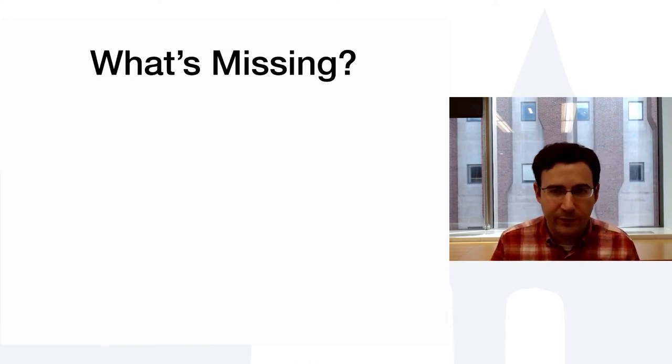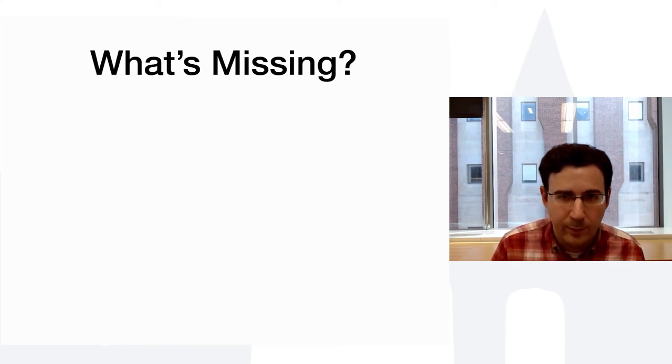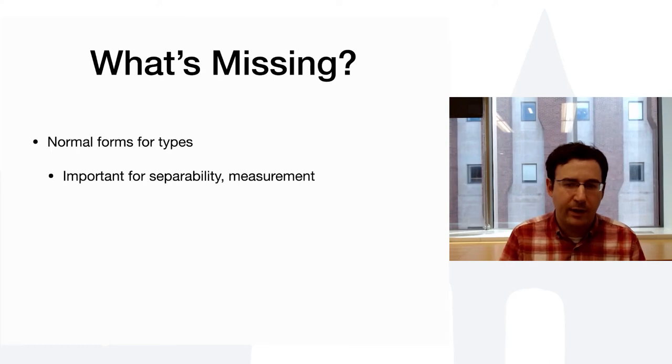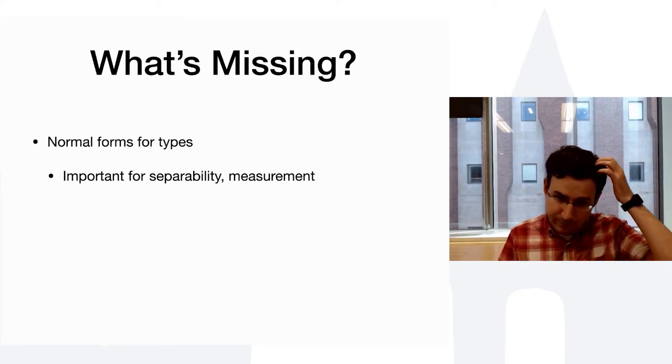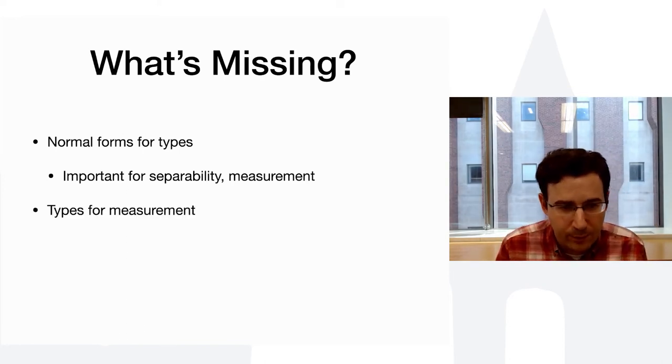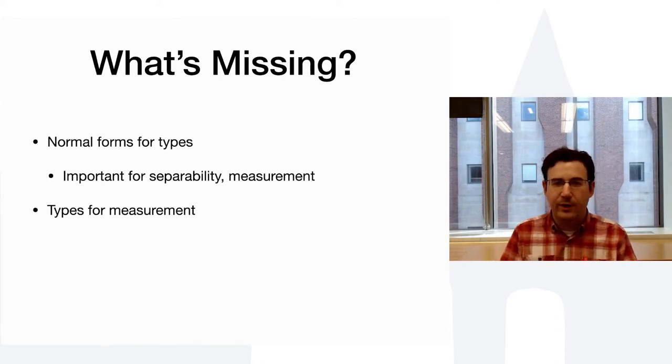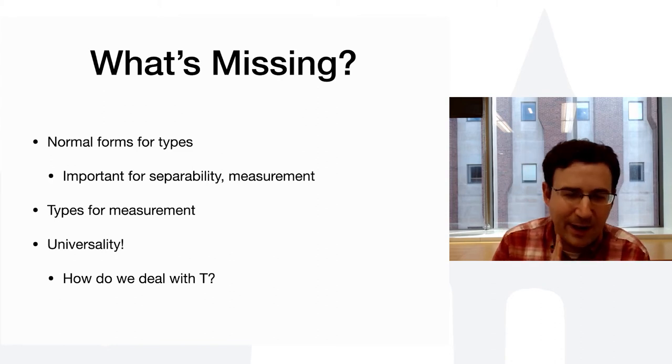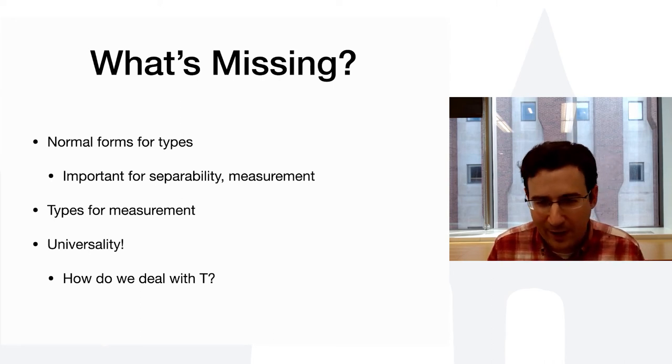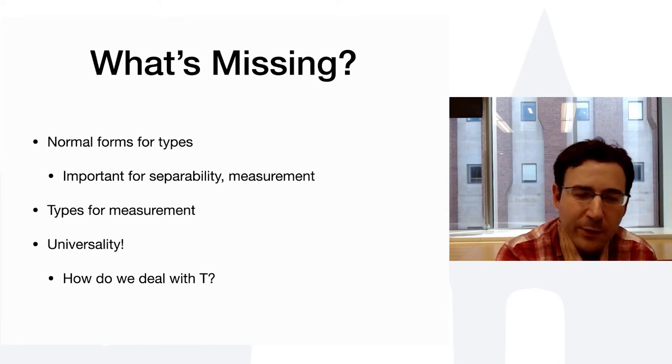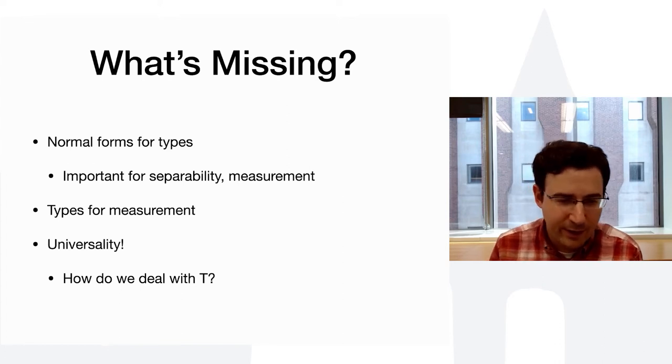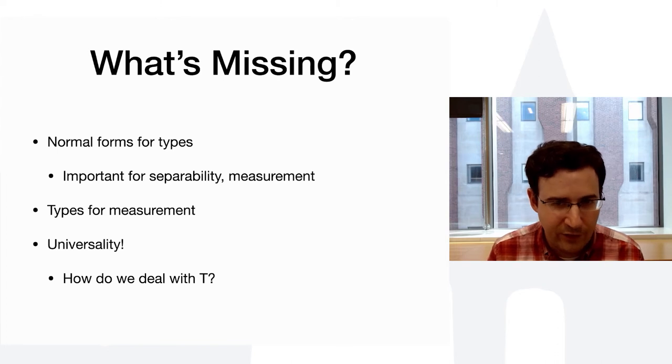So, what's missing from this very abbreviated version of our original Gottesman types paper? A few things. So, one thing is normal forms for types. This isn't typically necessary. You could have multiple types that fundamentally are isomorphic to one another, but it turns out to be important for recognizing separability and being able to type measurement. So, that's going to be step one. Another thing we're missing is types for measurement itself, which is important in quantum computing. And finally, and probably most obviously, we're missing universality. And that is our type system can only type Clifford circuits right now. And that's not very useful. So, we can boil down the question of universality, if we want to, to how do we deal with T gates in our type system?